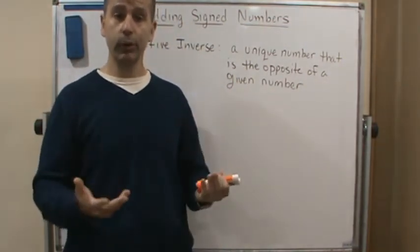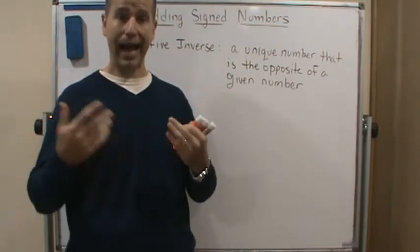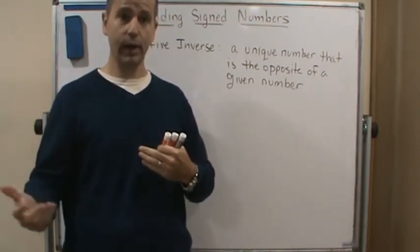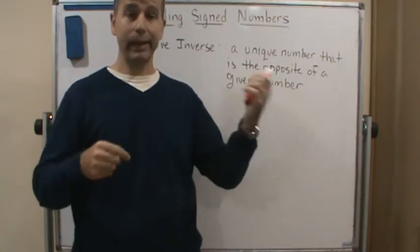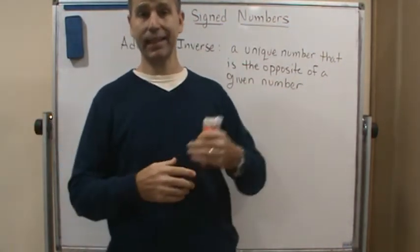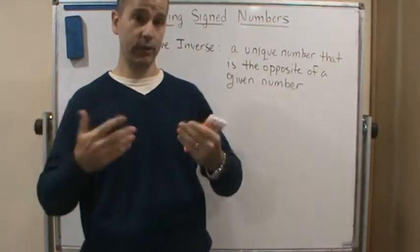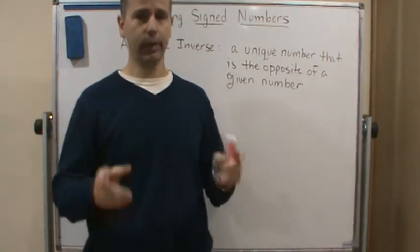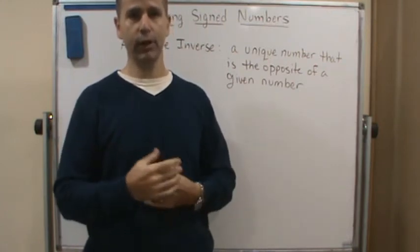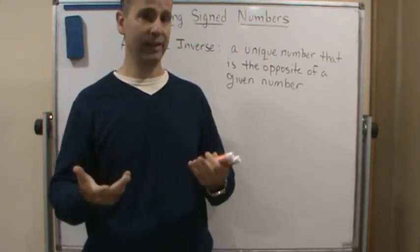So another word that we use for those opposites are additive inverses. So instead of saying that three and negative three are opposites, we can say that those are additive inverses of each other. Now where does this term additive inverse come from? It comes from a property of integers that we need to know.